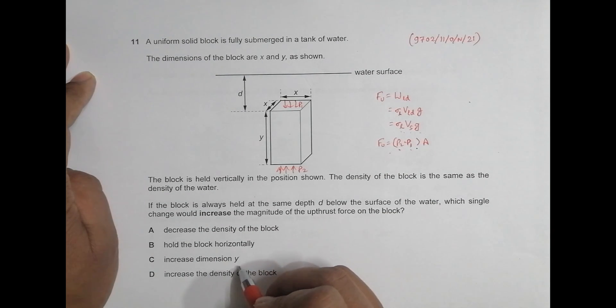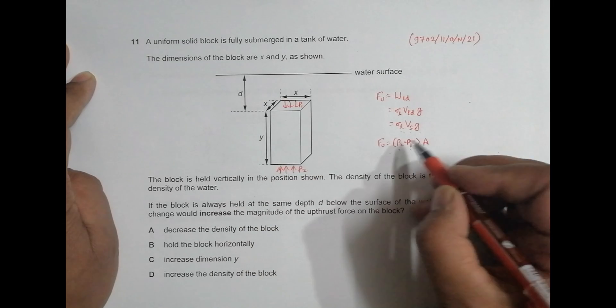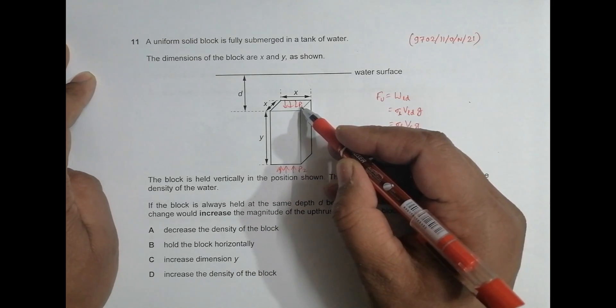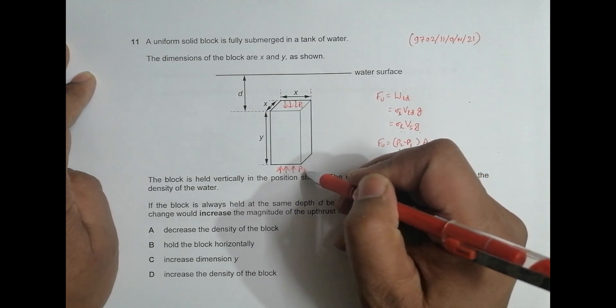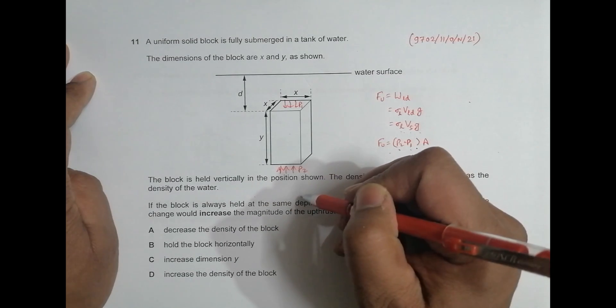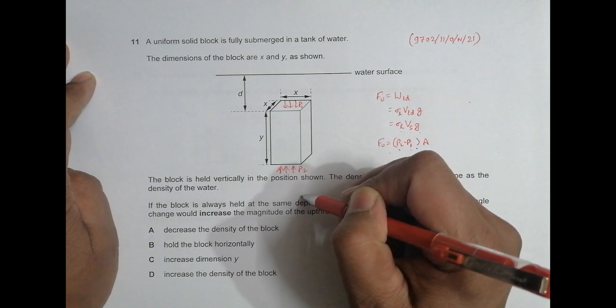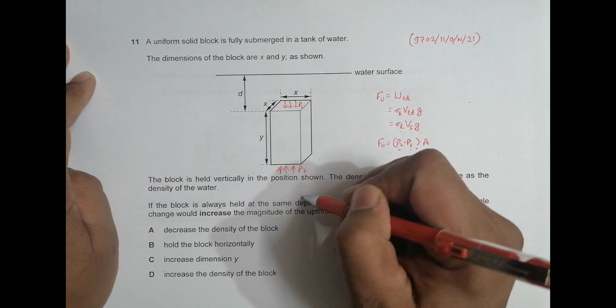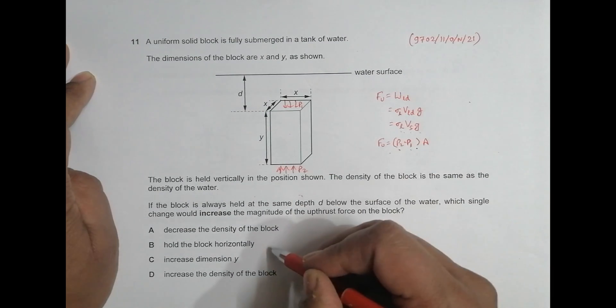Next is increase dimension Y. So if I increase this Y, what happens is this P1 might remain the same, P2 might increase. If I make it like this, P2 will increase because P2 is at a much greater depth. P equal to rho g into that H. H is the depth. So this depth increases, and that's why Fu can increase.